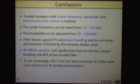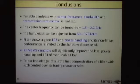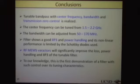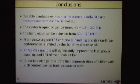Now let's talk about the conclusion. This work demonstrates center frequency, bandwidth, and transmission zero control. The center frequency can be tuned from 1.5 to 2.2 GHz. The bandwidth can be adjusted from 50 to 170 MHz. IP3 and power handling are limited by the Schottky diode, so if you want lower loss, higher IP3 and power handling, you can use an RF MEMS varactor. To our knowledge, this is the first demonstration of a filter with simultaneous center frequency, bandwidth, and transmission zero control. Thank you for your attention. Are there any questions?